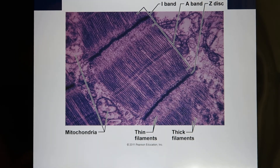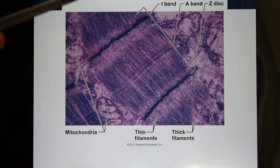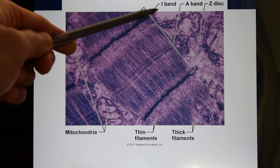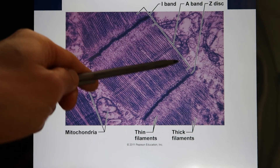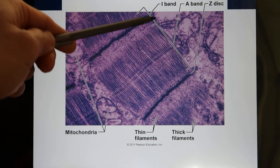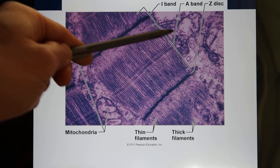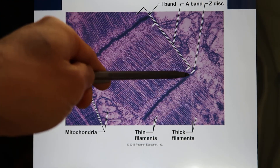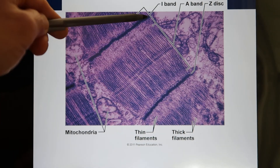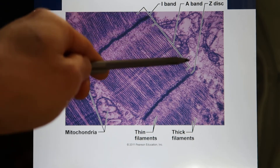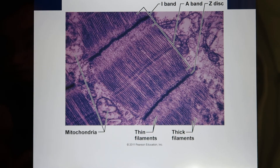That's how they look under the microscope — you have the A-band with thick filaments, the I-band with thin filaments, and the region between one Z-line and another Z-line. Sometimes they call it the Z-disc, sometimes the Z-line. That is the sarcomere.